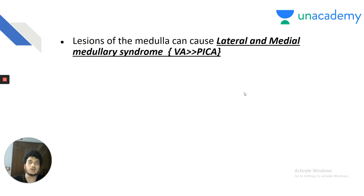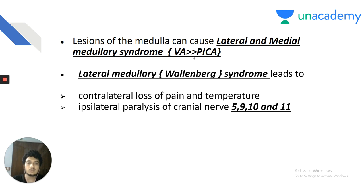Lesions of the medulla cause lateral medullary syndrome or medial medullary syndrome. In both, the vertebral artery is most commonly involved — more commonly than PICA. Lateral medullary syndrome or Wallenberg syndrome: contralateral loss of pain and temperature from the body, and ipsilateral cranial nerve palsy of CN 5, 9, 10 and 11. The 9th, 10th and 11th nerves arise laterally from the medulla; the 12th hypoglossal is medial.